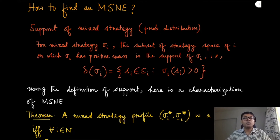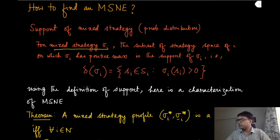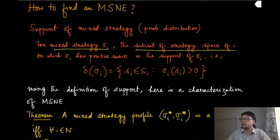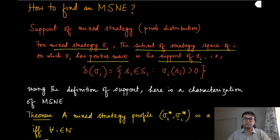First, we are going to define the support of a mixed strategy, which is the same as the support of a probability distribution. If you are looking at a specific mixed strategy — which is a probability distribution of a specific player over their strategy space S_i — then the support is the subset of that strategy space on which this mixed strategy has positive probability mass. Note that it must be positive; probability masses are always non-negative, but we isolate only those strategies where the mass is positive. That is called the support of sigma_i.